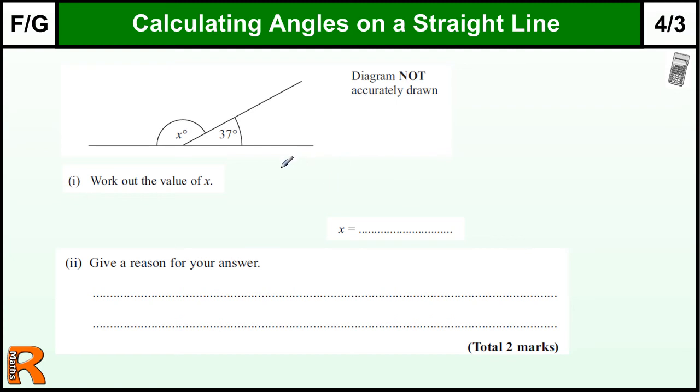So work out the angle. X plus 37, because it's a straight line, that's half a circle, so that's 180 degrees. So X is going to be 180 minus 37.